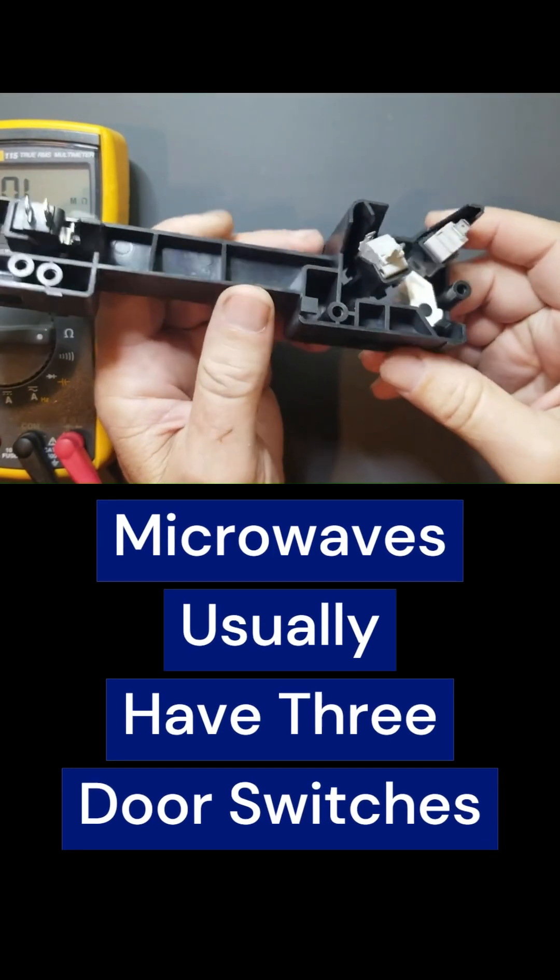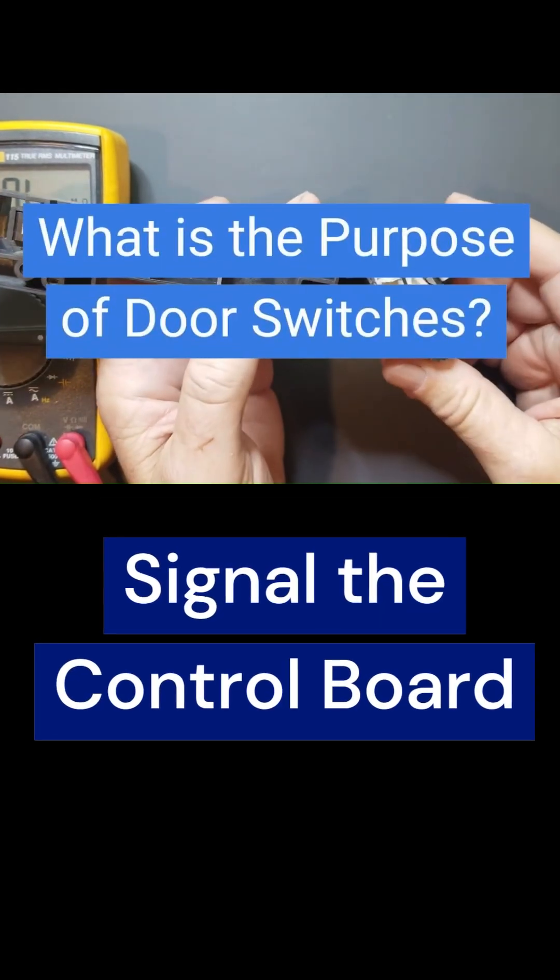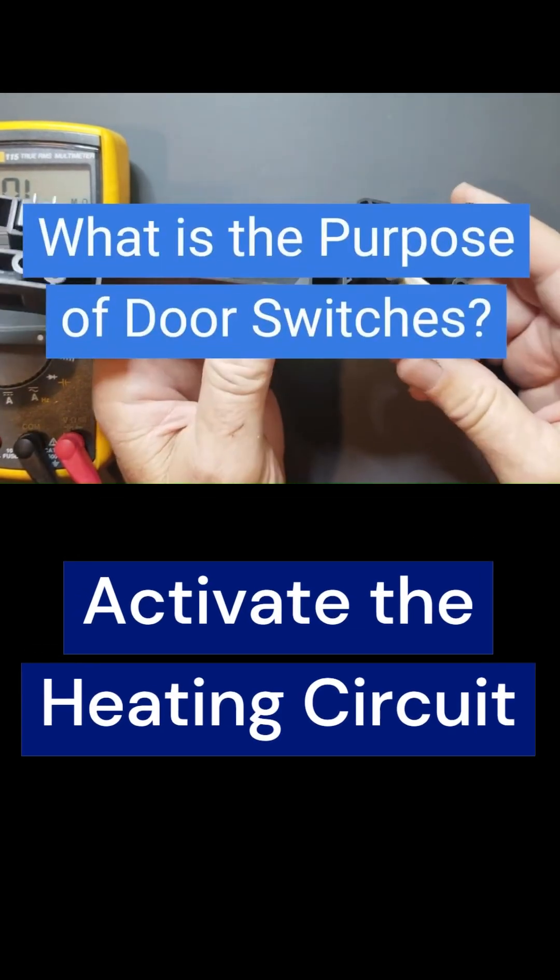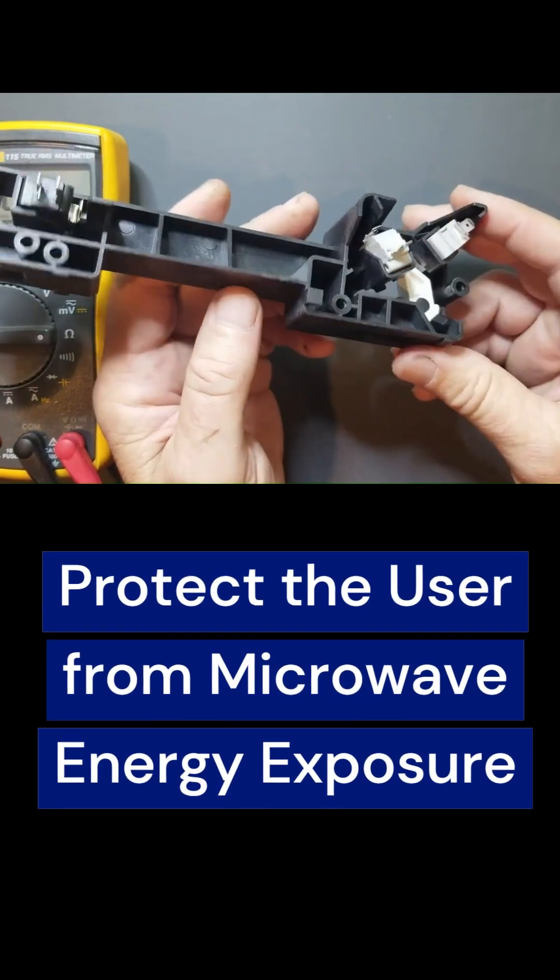Microwaves usually have three door switches. Their job is to signal the control board, activate the heating circuit, and protect the user from microwave energy exposure.